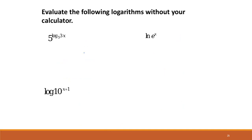Using that same rule: 5 to the log base 5 cancels and we're left with 3x. Then ln and e cancel and we're left with x. Common log and 10 cancel and we're left with x plus 1.